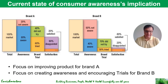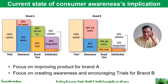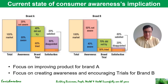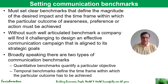For Brand A, where 80% of triers are disappointed, advertising alone cannot help effectively because it generates awareness and trials that are already reasonably high, but only 20% of customers are satisfied. The marketing focus should be on improving the product. For Brand B, where only 40% of the market is aware but 80% of triers are satisfied, the marketing strategy should focus on generating awareness and encouraging trials, and communication objectives should align with that.